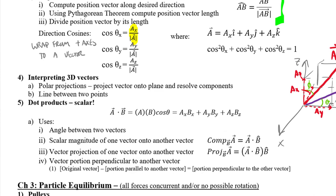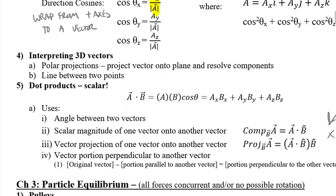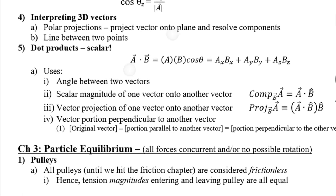We also talked about vectors between two points. You can take the final point minus the initial point, but I find it easier to look at the change in position between the two points — isolating the change in x, y, and z separately. You get the same answer either way; I just see more algebra errors when people strictly focus on subtracting final coordinates minus initial coordinates.